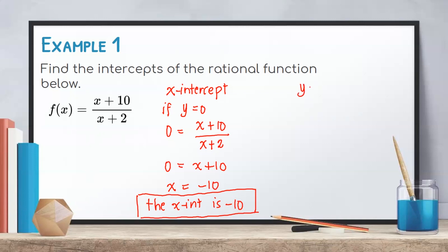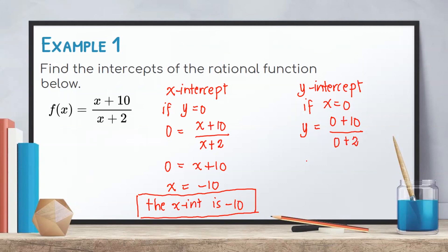For the y-intercept, we set x = 0. So y = (0 + 10) / (0 + 2) = 10 / 2 = 5. Therefore, the y-intercept of our given function is 5.